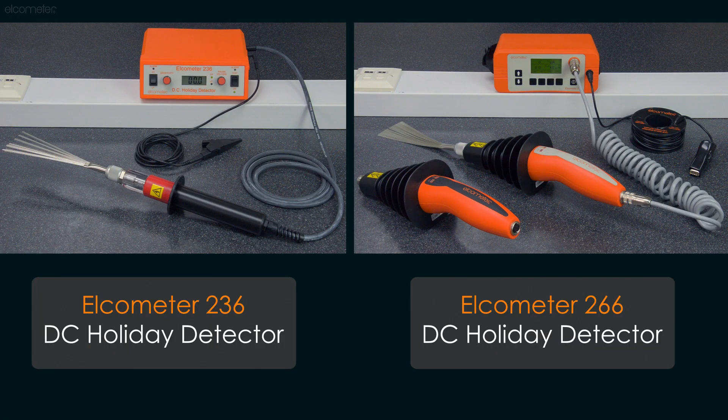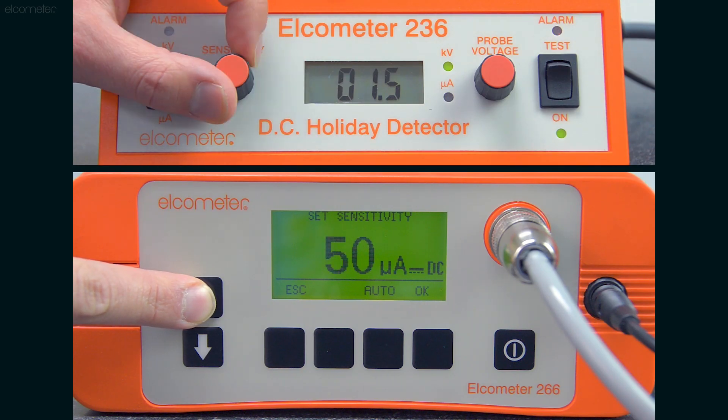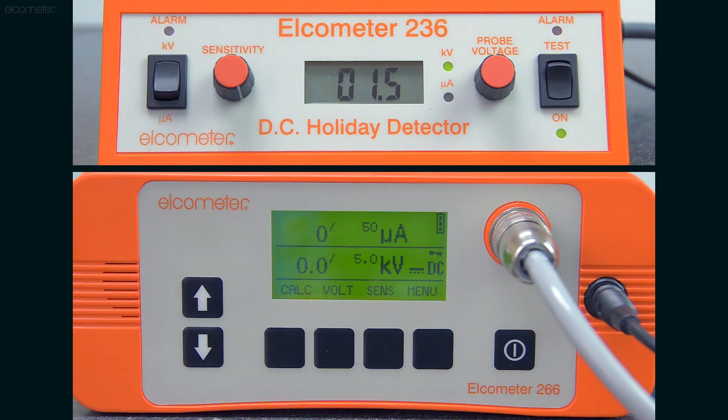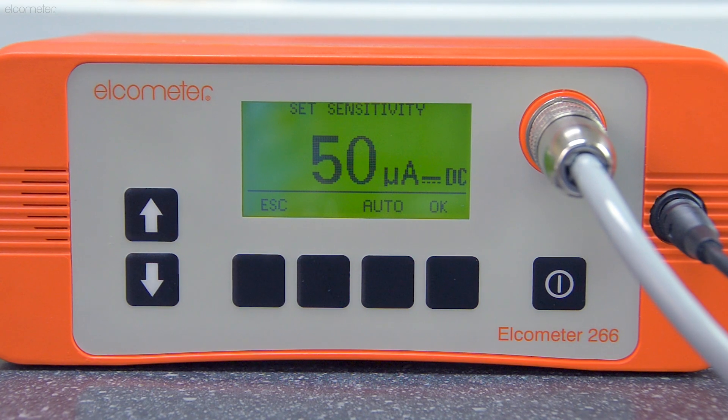Some DC holiday detectors, such as the Elcometer 236 and Elcometer 266, will also allow you to set the level of current at which the alarm triggers, sometimes known as the sensitivity. If a holiday detector is too sensitive, it could alarm from a charge that's either naturally present or which builds up during the testing process.